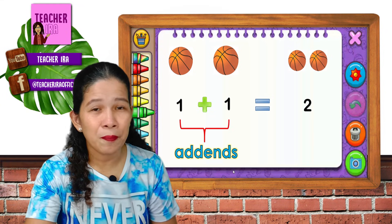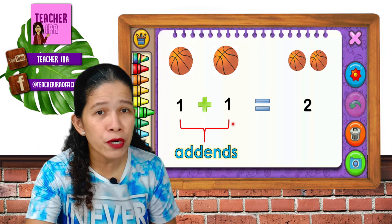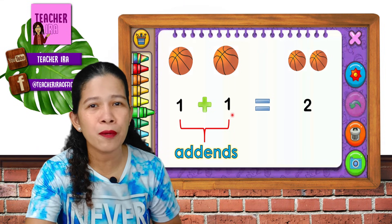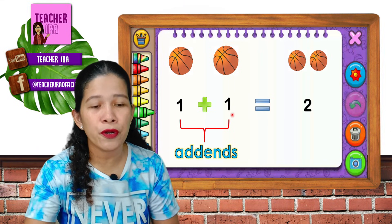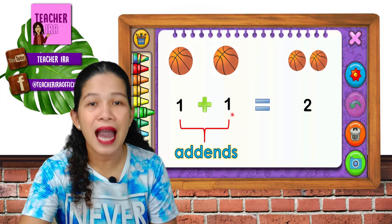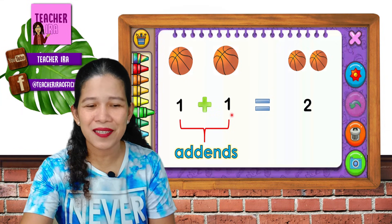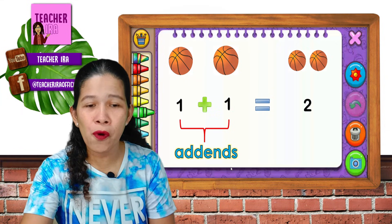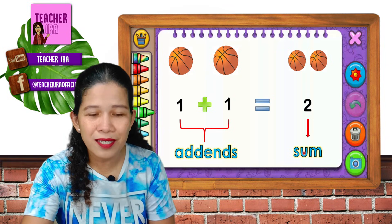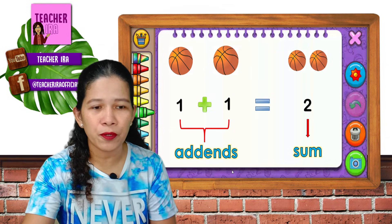Now, kids, please understand that these two numbers — or no matter how many numbers that you put together — we call those addends. You say addends. And of course, this answer here is called sum. Now let's have more examples.